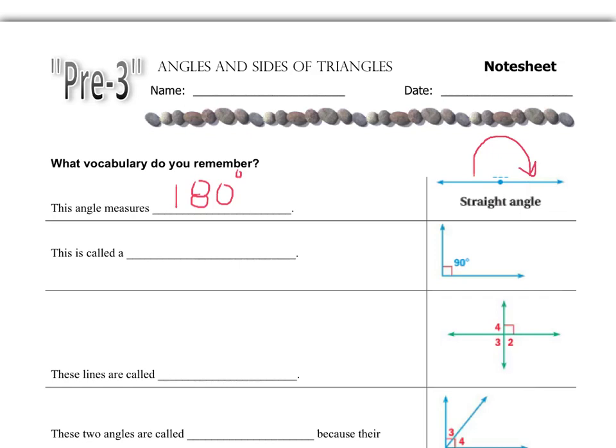The angle on the right, with a little box, is a 90 degree angle. This angle is called a right angle. Sometimes we see the 90 degrees written there; other times it's just the box, and we need to recognize that that means a right angle. Next, we have two intersecting lines that form a 90 degree angle — these lines are called perpendicular lines.